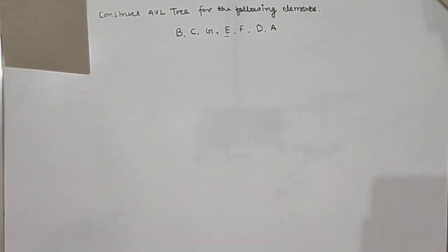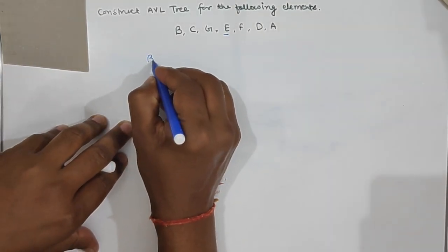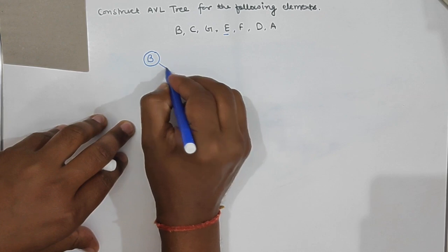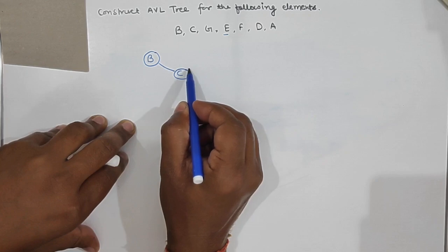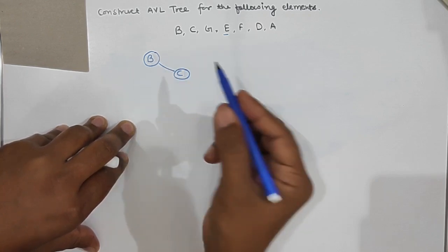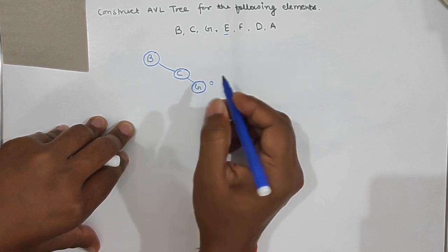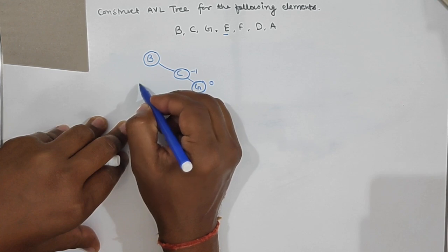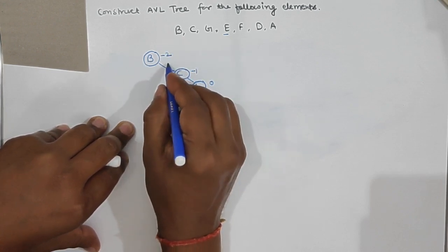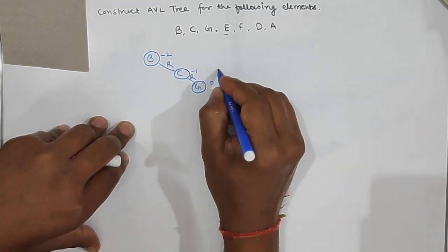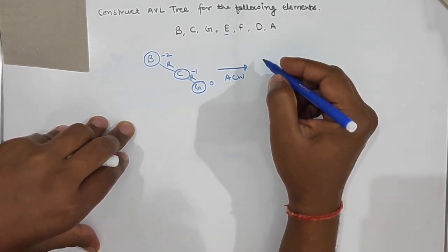The question is to construct an AVL tree with the following elements. We start with element b. C is greater than b so we insert c. Now check the balance factor — the tree is balanced, balance factor here is 0 and here is -1. Then we insert g. Balance factor is 0, -1, and 0. Then -2 appears, which is not allowed, so there is a problem in the right-right (RR) path.